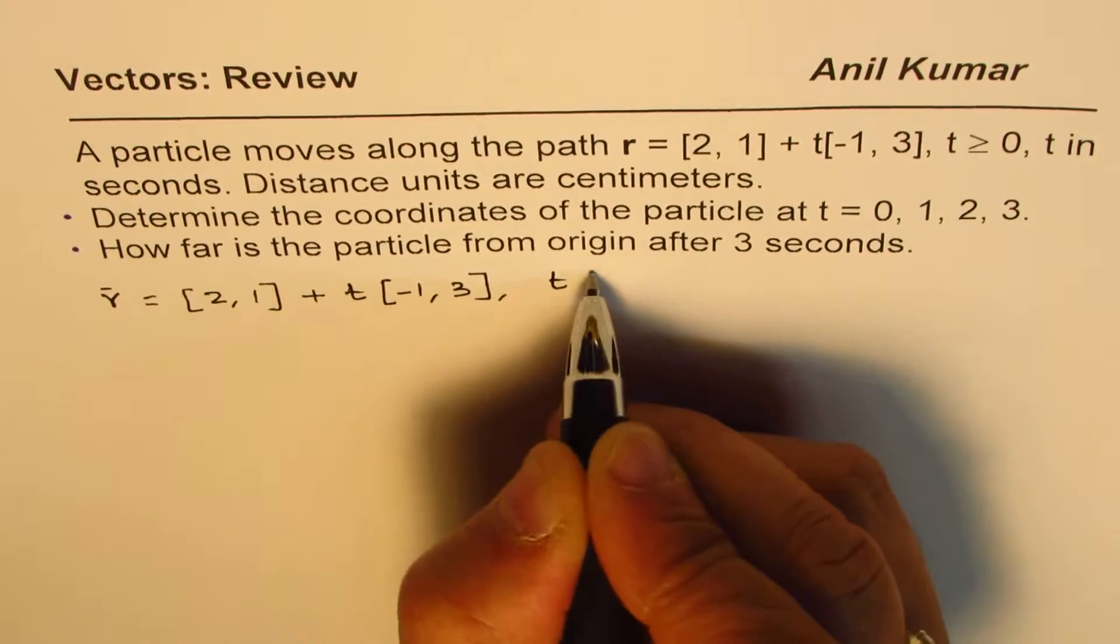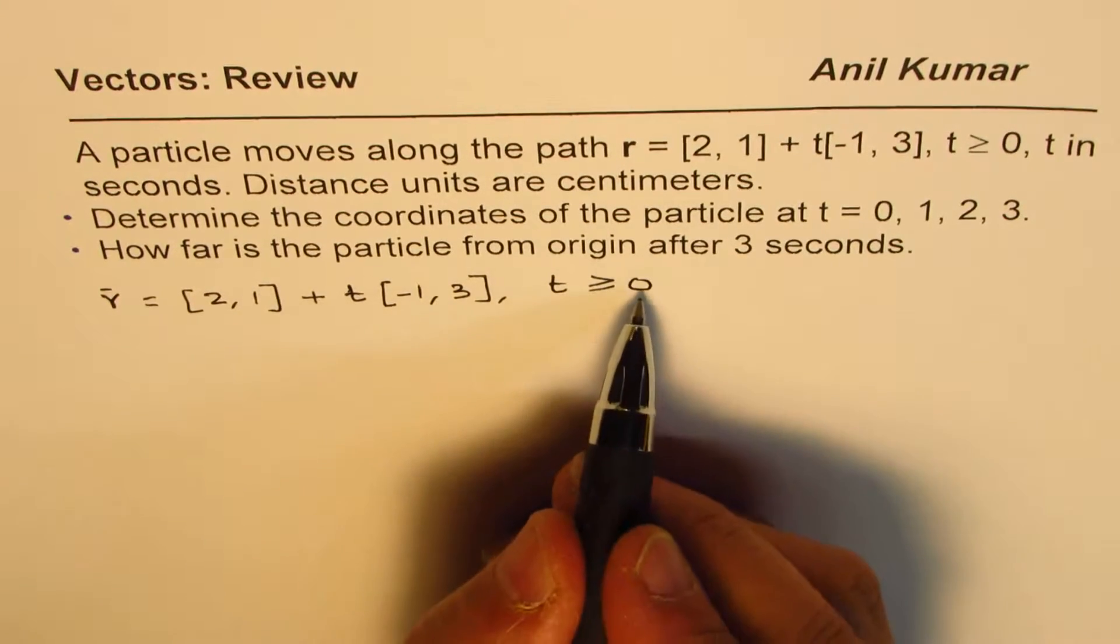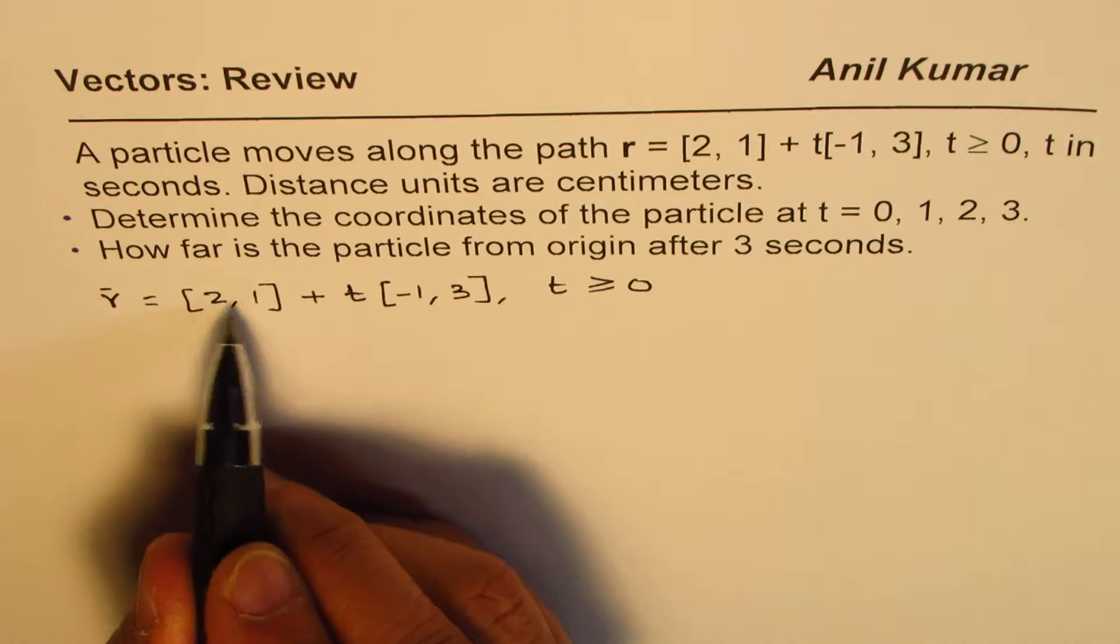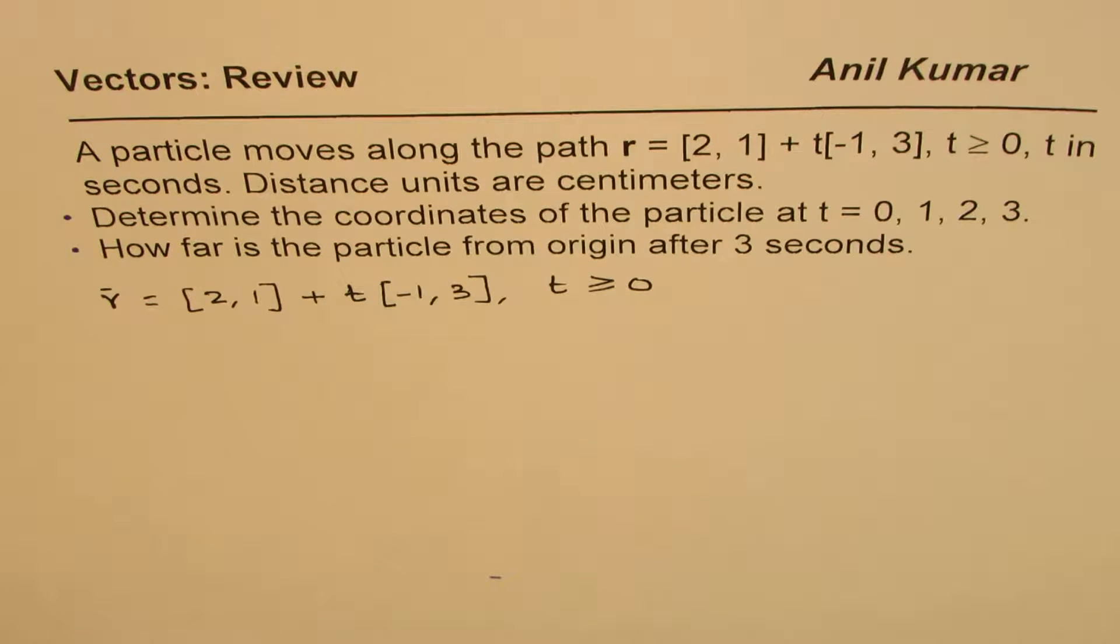We are given t is greater than or equal to 0. I said initial point because if I write t equals 0, this term will be 0. We are left with [2,1]. So it is the initial point normally when we are considering motion of a particle in space.